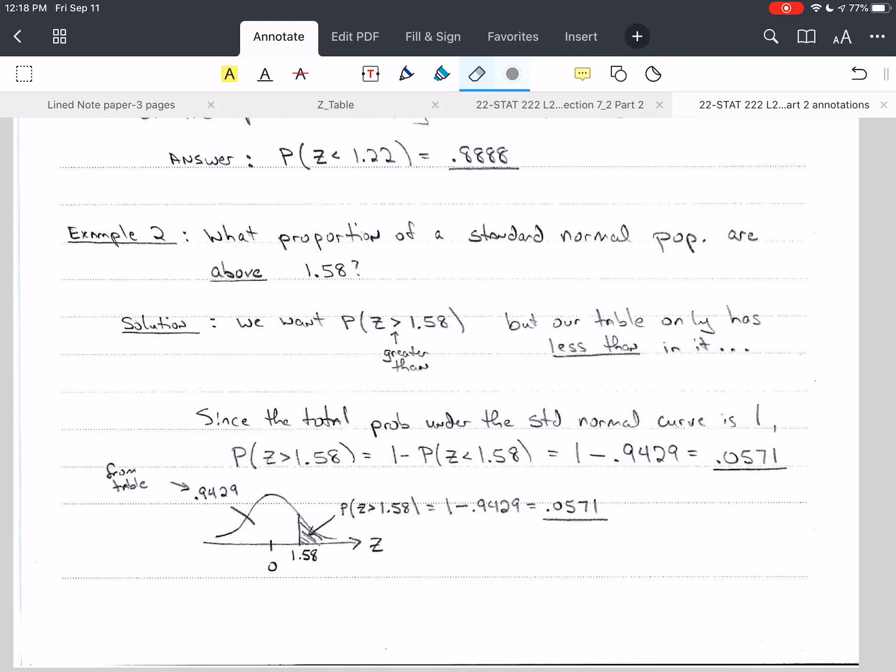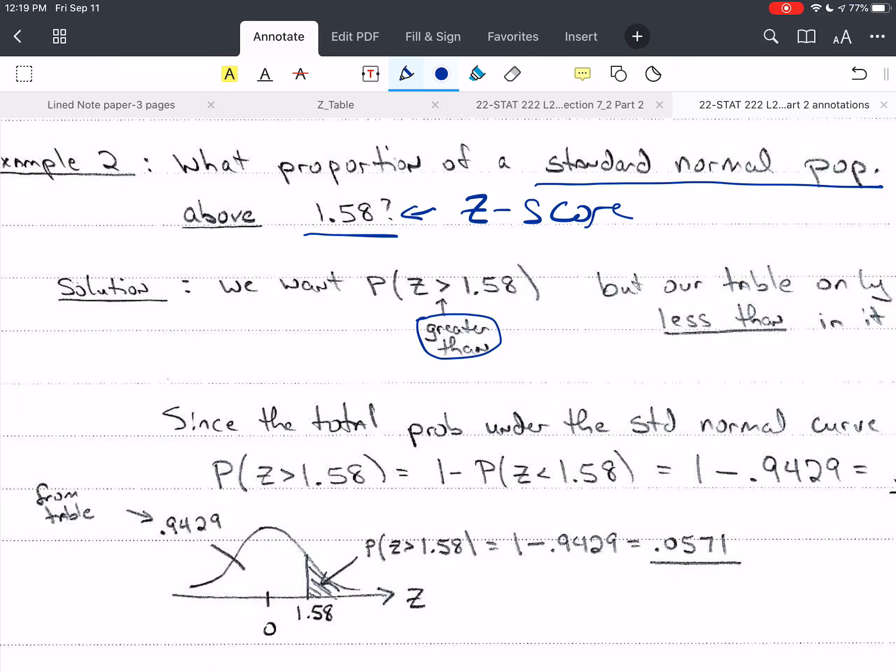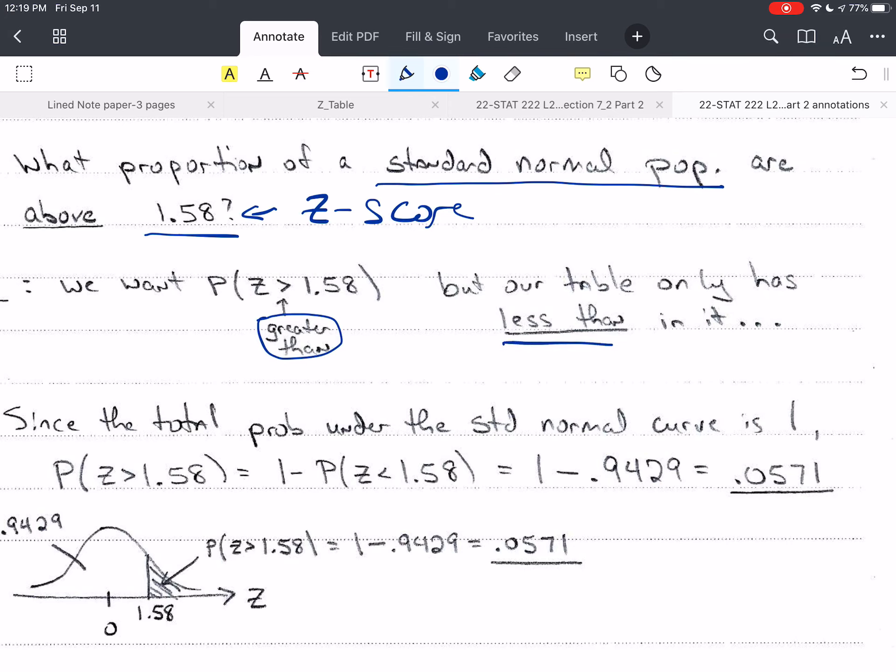So what proportion of the population of a standard normal population are above 1.58? Standard normal population means that this is a z-score. So we want the probability, I'll zoom in a little bit, the probability that z is greater than 1.58. You need to know you're greater than versus less than. So z is on the side that's bigger, so z is greater than the point which is smaller, 1.58. Our table only has less than, no matter how much we want it to be greater than, it doesn't have that.